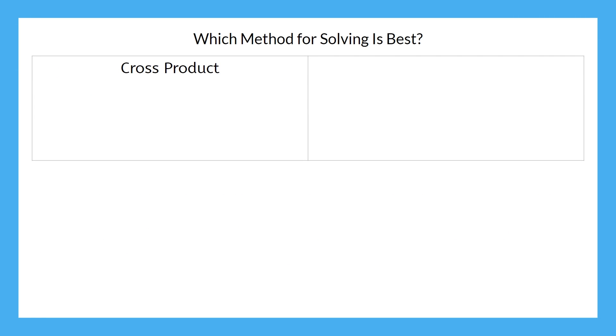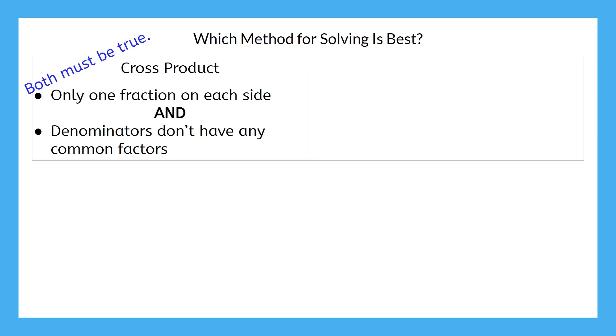In the previous lesson, we used the cross product to solve rational equations. We were looking for equations with only one fraction on each side, and denominators that didn't have any common factors. So, both of these requirements had to be true in order to use the cross product.